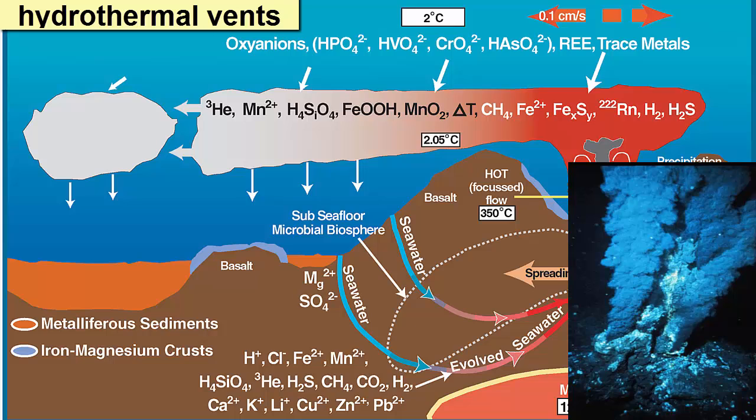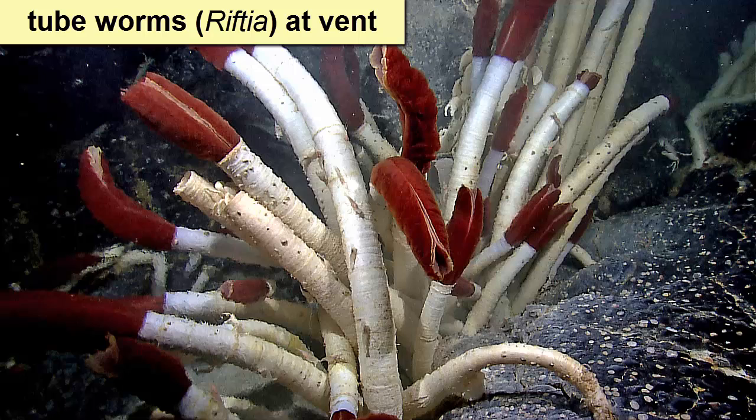The black material you see in the liquids leaving the vent are very tiny particles of iron sulfide. These chimneys can be made up of many different kinds of metal sulfides, including zinc, iron, copper, and rare metals like gold and silver. A common animal found living near these vents in the Pacific Ocean are tube worms.